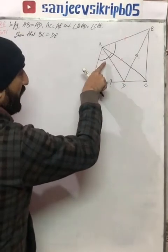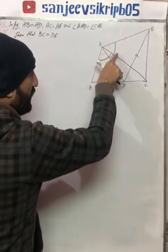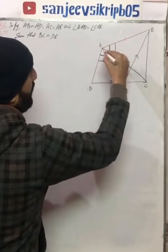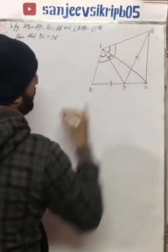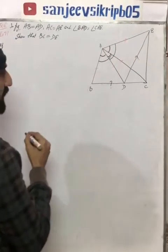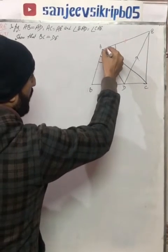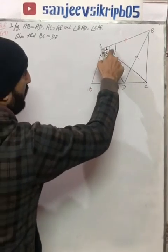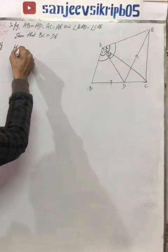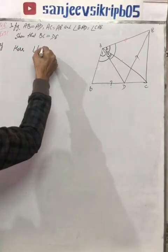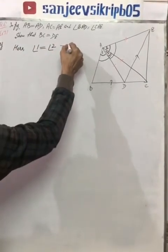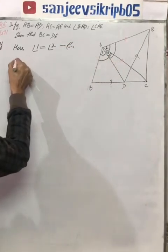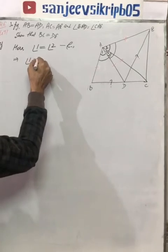Be attentive. If we look at these two angles, this part is common. But we are given that angle 1 is equal to angle 2, which is given. So let's add angle 3 to both sides. Angle 1 plus angle 3 is equal to angle 2 plus angle 3.